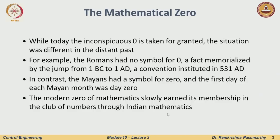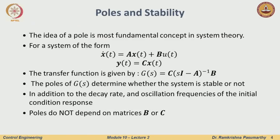The zero invented in India went through the Arabic world and then to the west through Europe. If you typically ask a European who invented zero, they would think it is an Arabic number system because that is where they imported it from, but it is the biggest contribution of Indian mathematics. What we will look at is the role of zeros in the context of control systems.